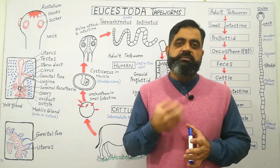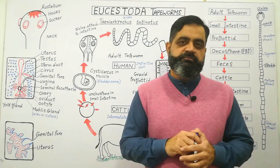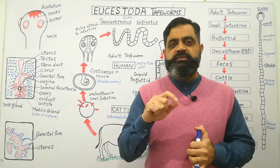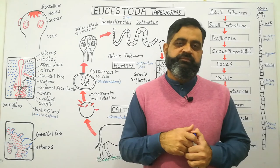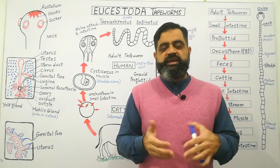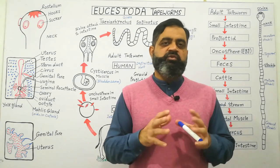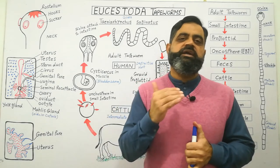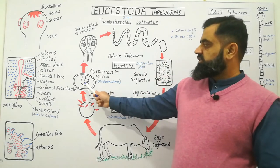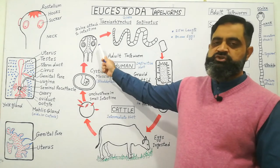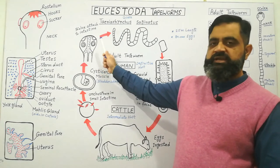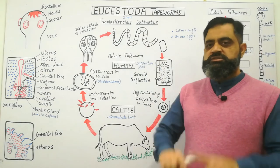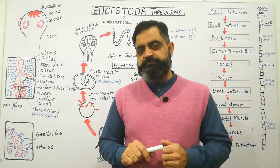When the animal is slaughtered and its meat is eaten by a human being, if the meat is not properly cooked — for example, in an undercooked barbecue — the encysted larva enters the digestive system of the human body, where it grows into a new adult tapeworm. It develops a scolex with suckers and hooks with which it attaches to the surface of the small intestine, completing the life cycle.